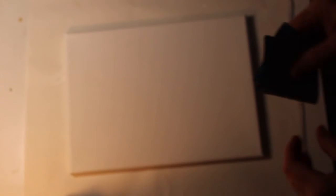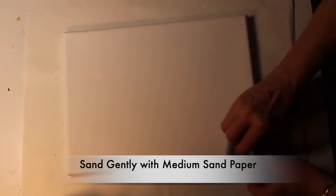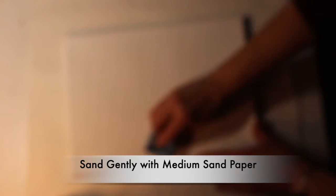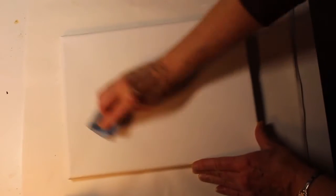Once the gesso is thoroughly dry, then it's time to take that medium sandpaper and begin gently sanding the surface that you have just gessoed. You'll want to try to sand away any brush stroke marks that you can see there and go over it several times.